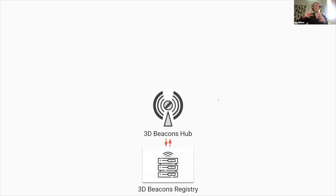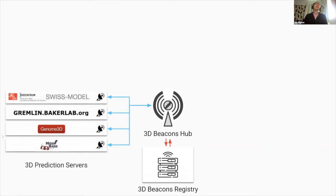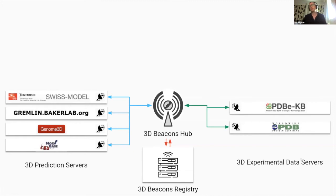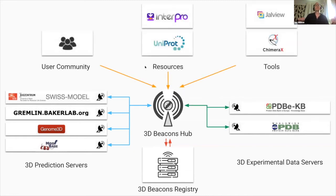The 3D Beacons hub is the main port of call within the 3D Beacons network. The hub talks to the registry to find all other nodes in the network, which comprise both 3D prediction servers and experimental data servers. The hub allows users to interact via web pages and APIs to interrogate the data, acting as a central coordination point for communication between many resources.